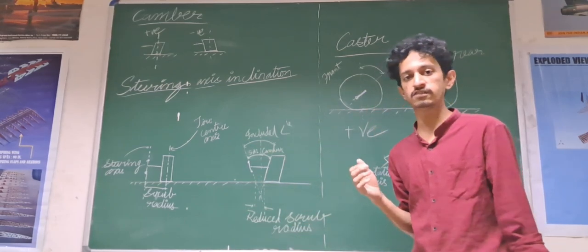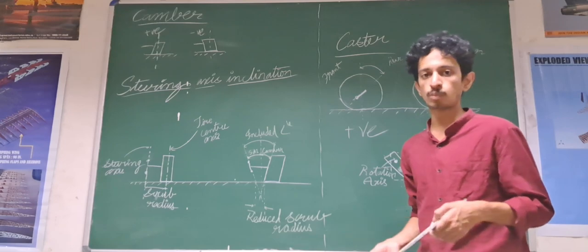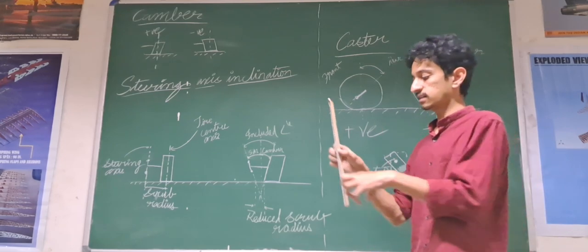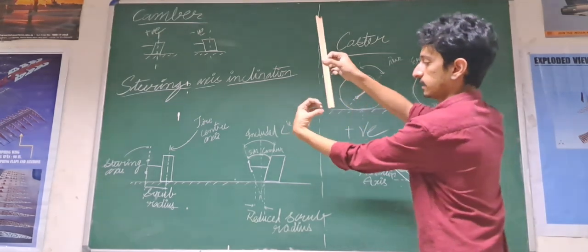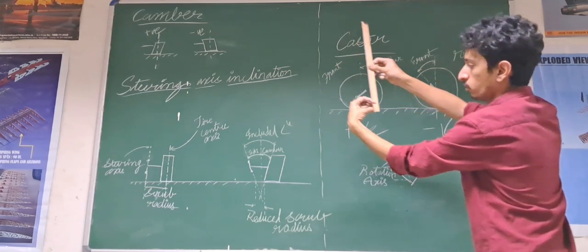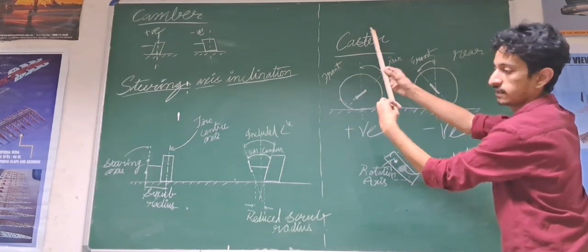This can also be observed when you take a trolley at your supermarket and you can observe that the steering axis is here and the wheel is here. You will be moving like this. When you turn, the wheel turns.